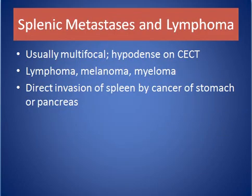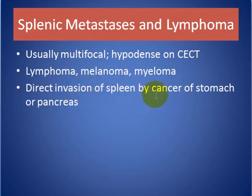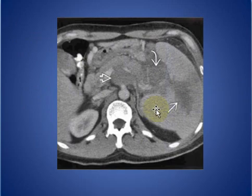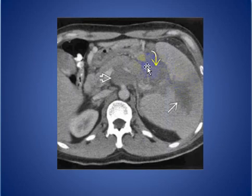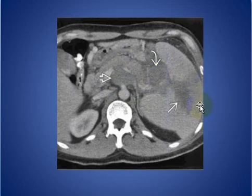Splenic metastasis and lymphoma are usually multifocal and hypodense on contrast-enhanced CT scan. Causes include lymphoma, melanoma, myeloma, and direct invasion by cancer of the stomach or pancreas. As seen here on axial contrast-enhanced CT, a heterogeneous mass within the splenic parenchyma and splenic hilum associated with abdominal lymphadenopathy in a patient with lymphoma.